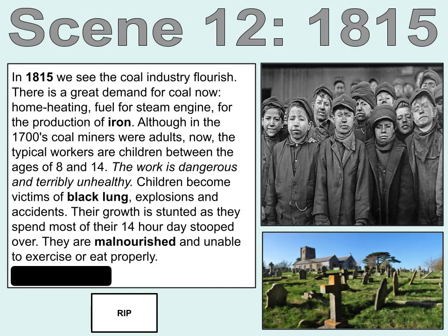Scene 12. In 1815, we see the coal industry flourish. There is a great demand for coal now — for home heating, fuel for steam engines, and for the production of iron. Although in the 1700s coal miners were adults, now the typical workers are children between the ages of 8 and 14. The work is dangerous and terribly unhealthy. Children become victims of black lung, explosions, and accidents. Their growth is stunted as they spend most of their 14-hour day stooped over. They are malnourished and unable to exercise or eat properly. Add one cemetery.